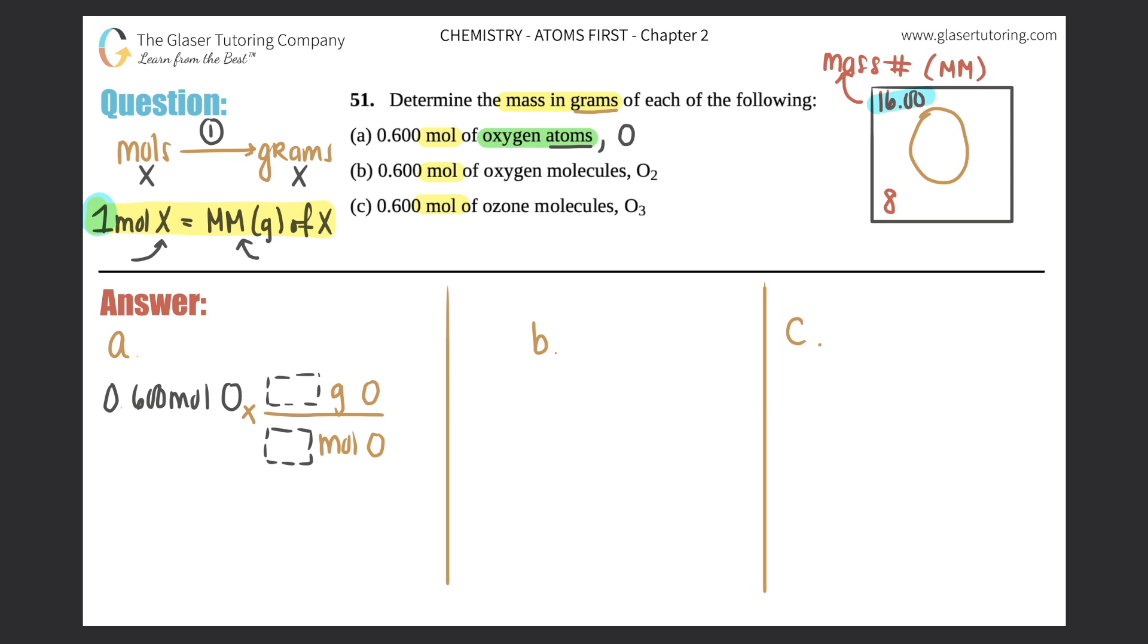So one mole—the 1 always goes with the word mole, and this number you find on the periodic table (PT). Since it's only one oxygen, we only take one of these. This would just be 16.00. Cross off moles of oxygen, and you get your answer: 0.600 times 16 equals 9.60.